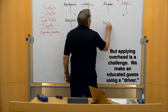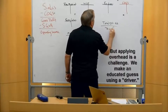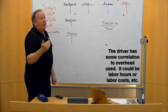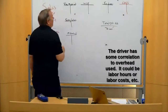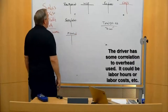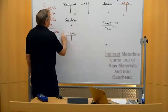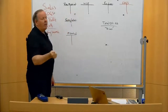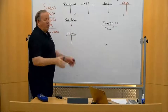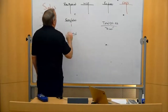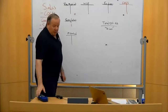At the beginning of the year we take our total estimated overhead and divide it by our driver. The driver might be labor hours, labor costs, machine hours, or kilowatts of electricity — whatever we think best determines how much overhead got used on a particular job. Indirect materials like nails and lacquer, and indirect labor like supervisors and quality control inspectors, get applied using our overhead application rate.